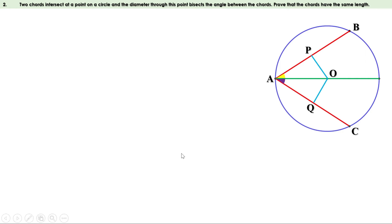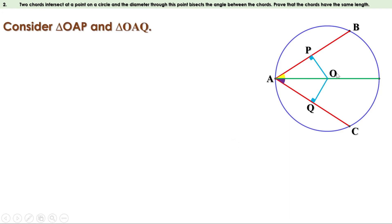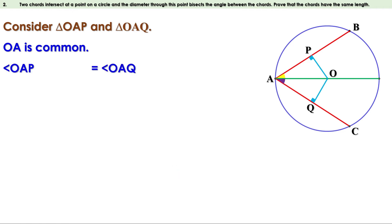Since OP and OQ are perpendiculars, angles P and Q are right angles. Now let us consider triangles OAP and OAQ. OA is the common side for both triangles. Given that these two angles are equal — that is, angle OAP equals angle OAQ. These two angles being right angles means they are also equal. Therefore the third angles are also equal, that is angle AOP equals angle AOQ. That means one side and the angles at the ends of this triangle are equal to one side and the angles at the ends of the second triangle. Therefore these two triangles are equal.